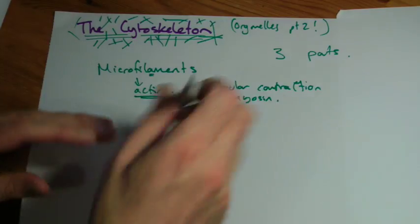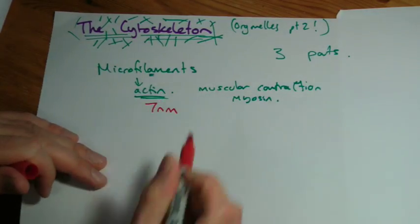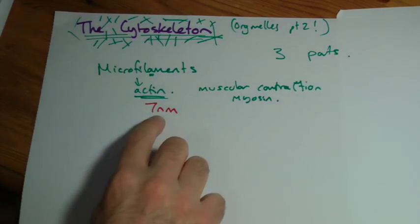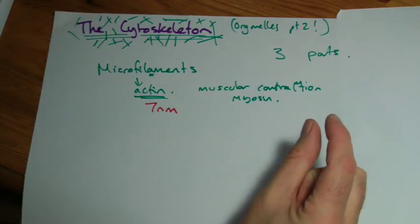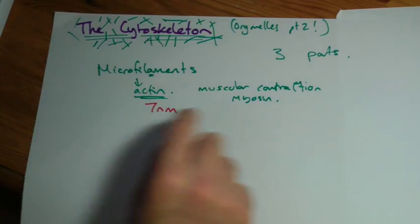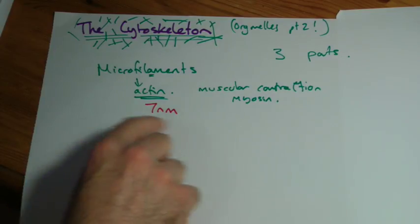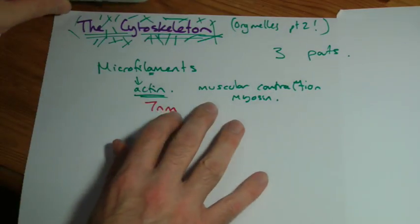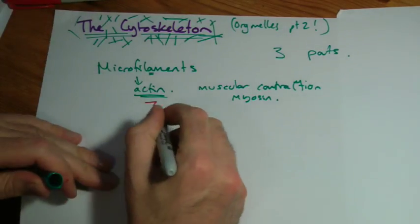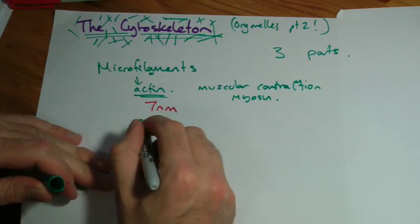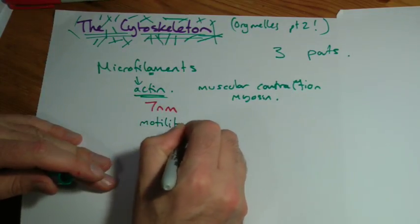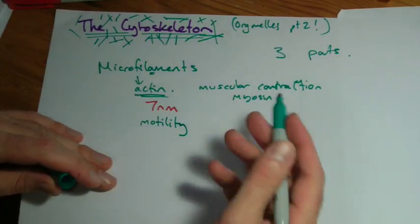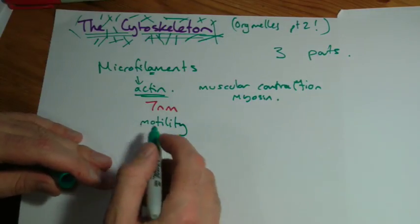Actin is the key one to remember. It's approximately 7 nanometers - I've seen 6 nanometer diameter quite a lot. The reason I'm including 7 here is 7 nanometers is the approximate width of the cell surface membrane. If you put 5, 6, 7 nanometers you'd be fine with that. Microfilaments are involved in general cell motility. Mobile means something that's moving, motile with a T means something that can move itself.